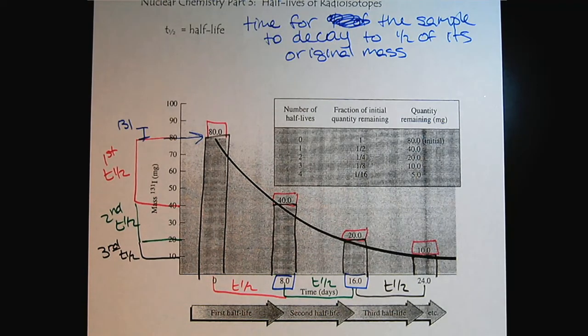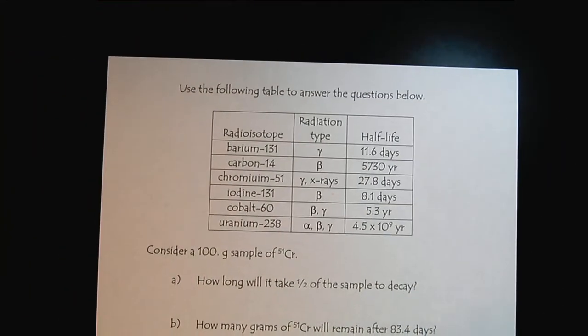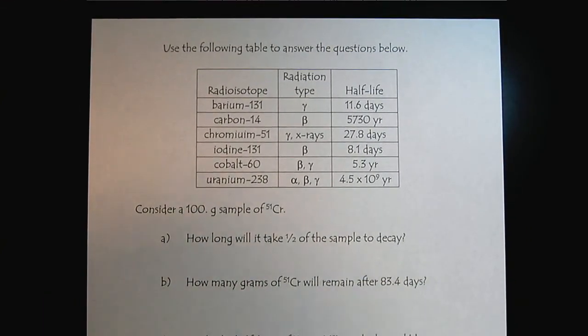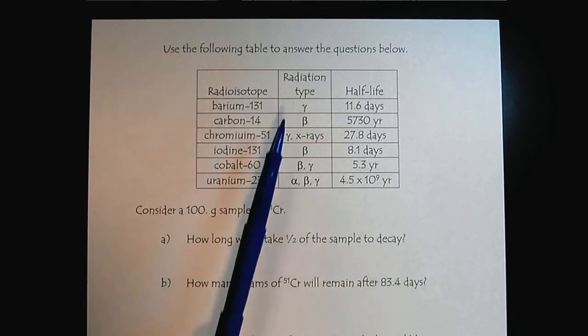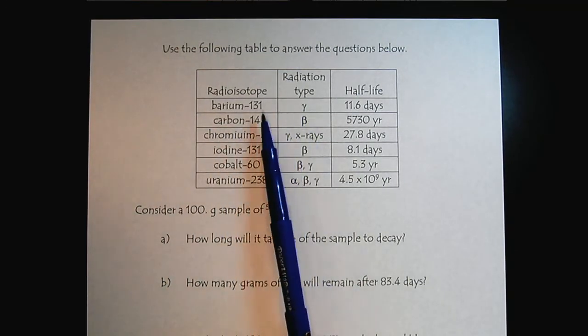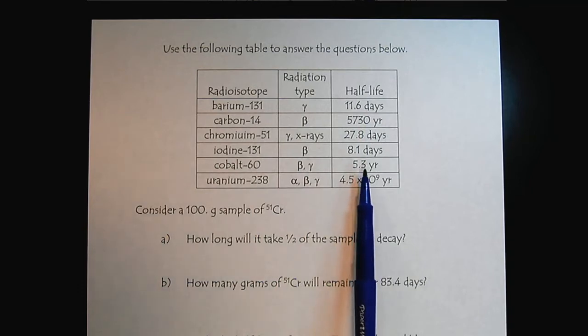So now let's look at some different radioisotopes and compare their half-lives. So we'll look on the next page. And we can see that half-lives are independent of the type of radioactive decay. So we can see here some gamma emitters, barium 131, a little over 11 days. And then here's cobalt 65 years, over five years.